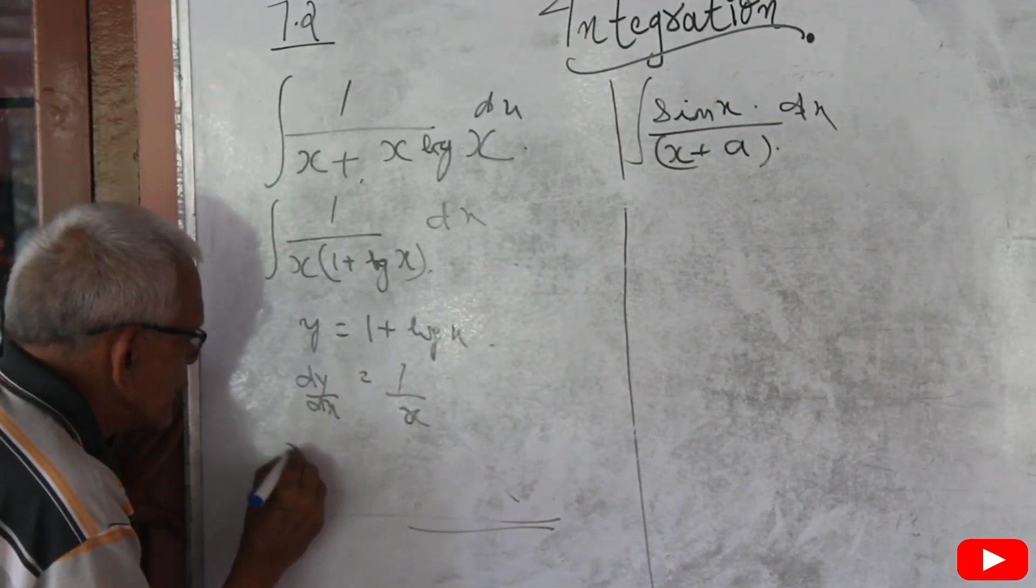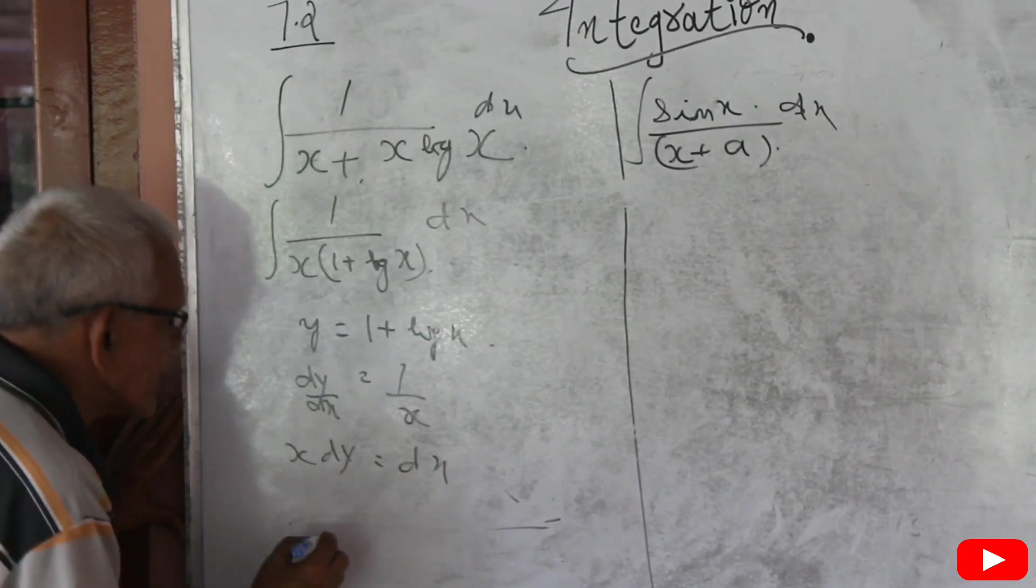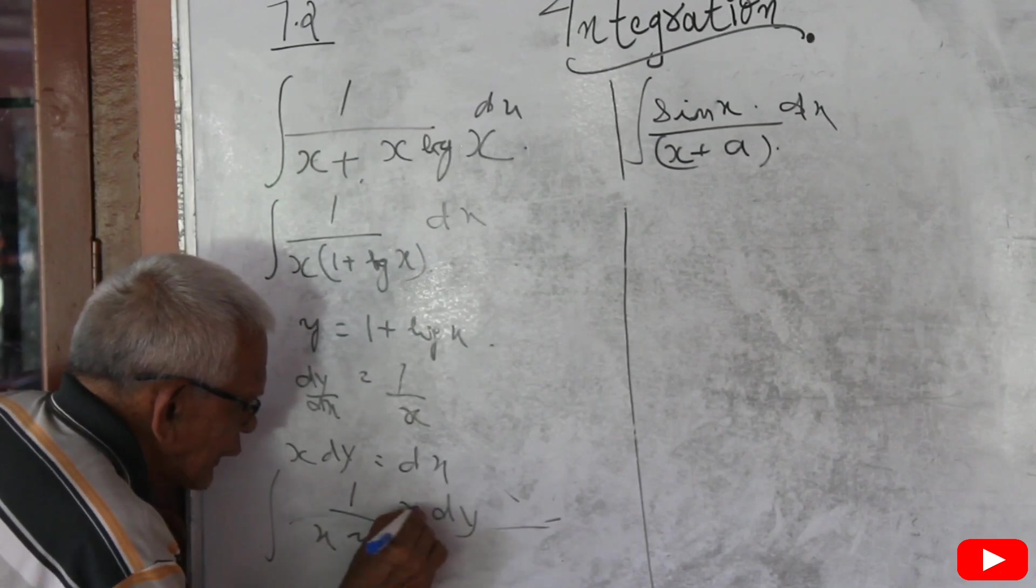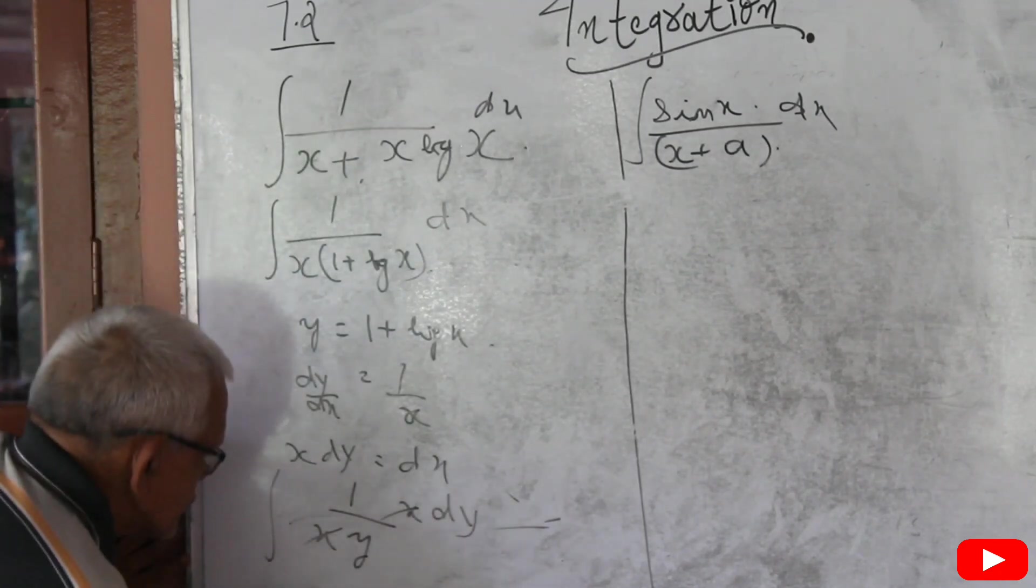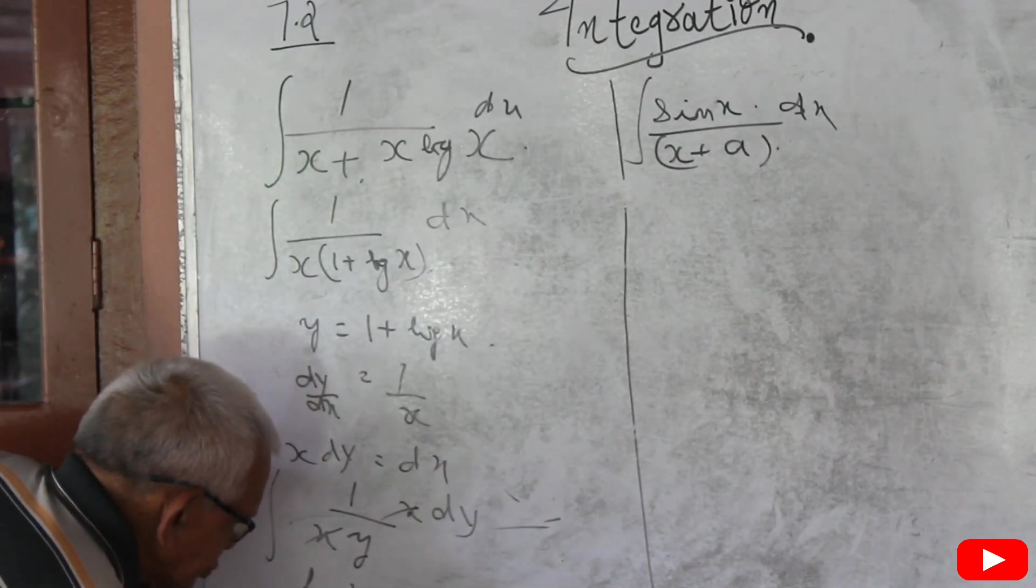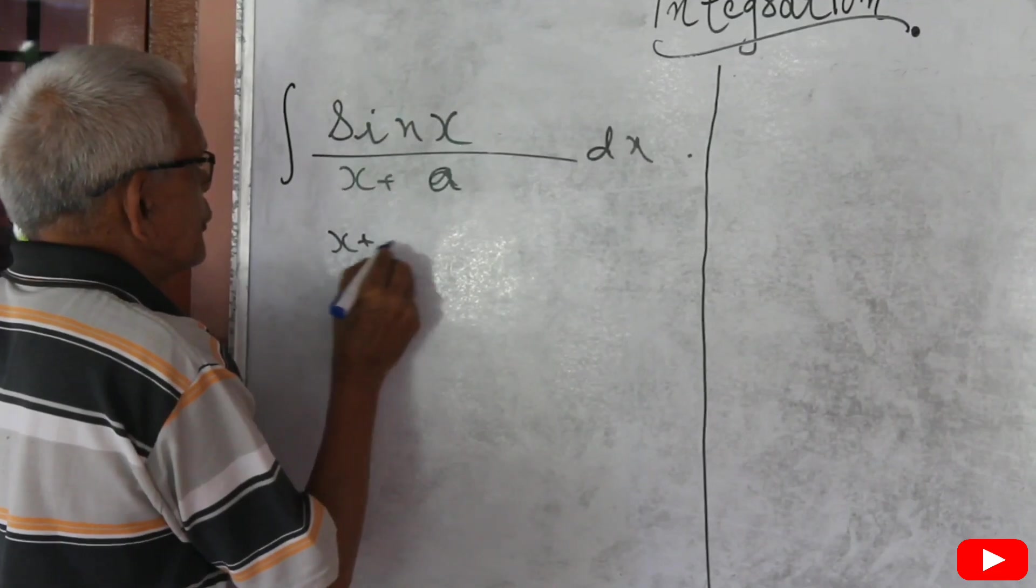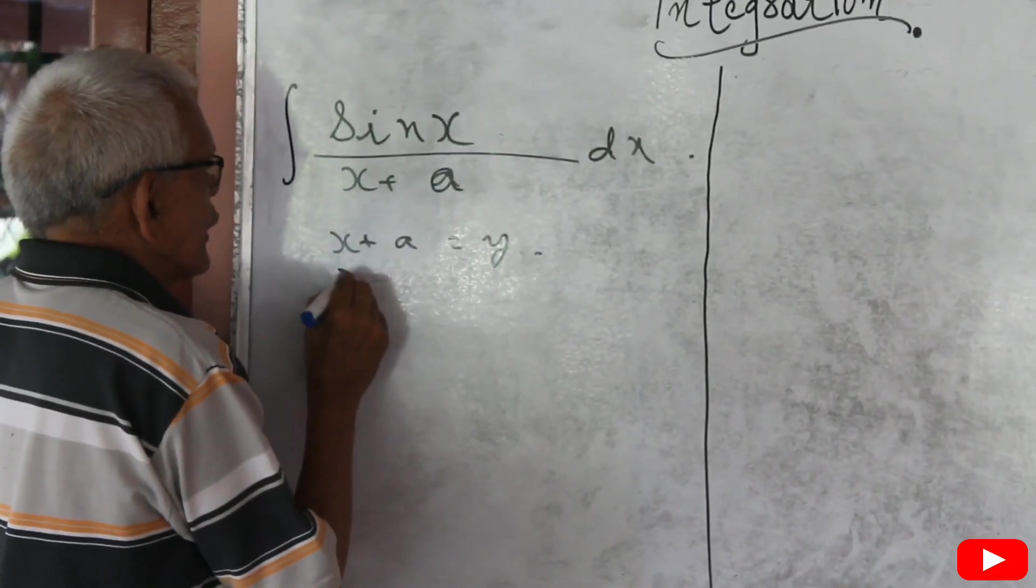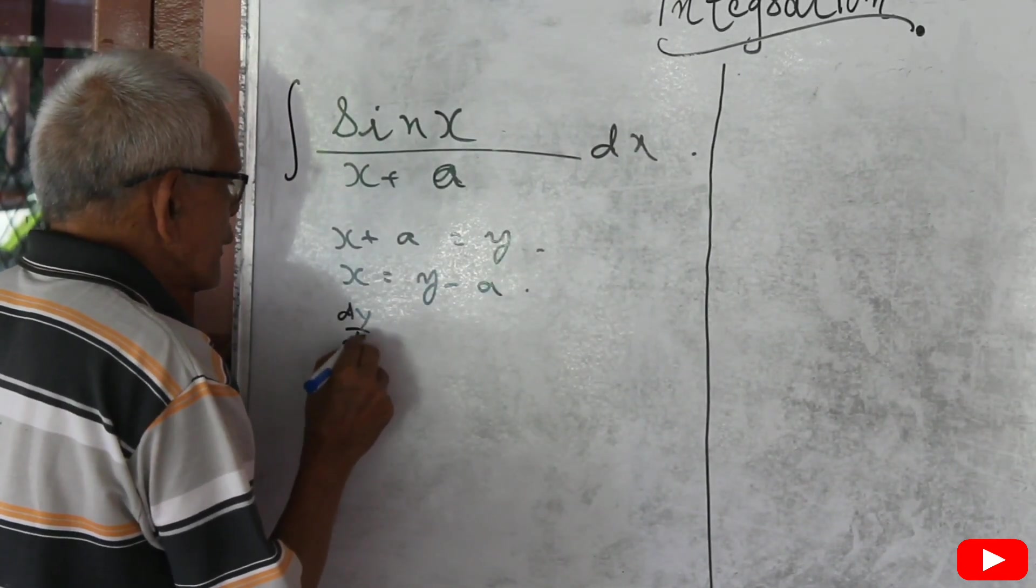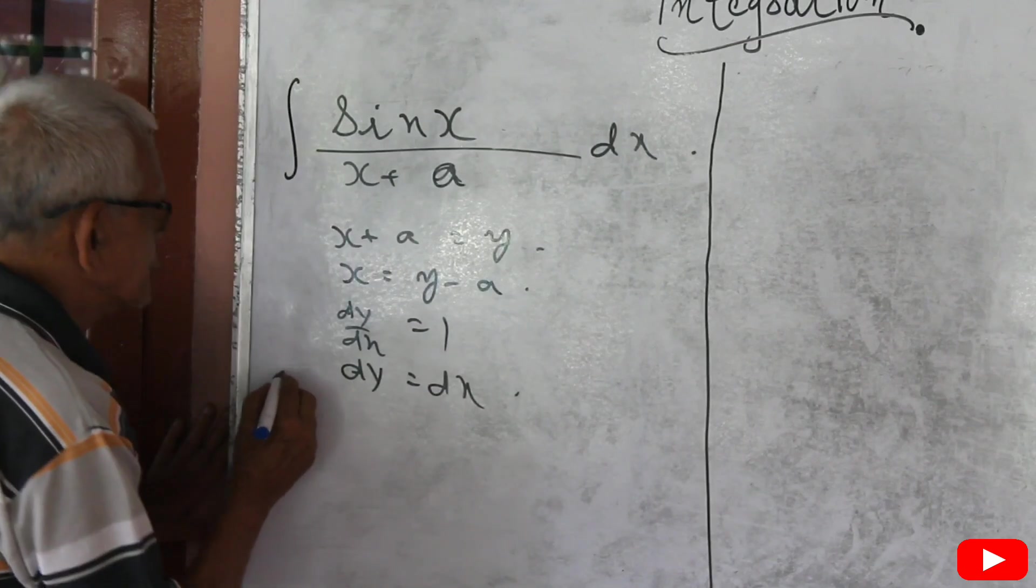Differentiate, cross multiply, substitute for 1 plus log x. x cancels, 1 by y dy means log y. Substituting for y, x plus a equal to y. x equal to y minus a. Differentiating, dy by dx equal to 1, dy equal to dx. Substituting.